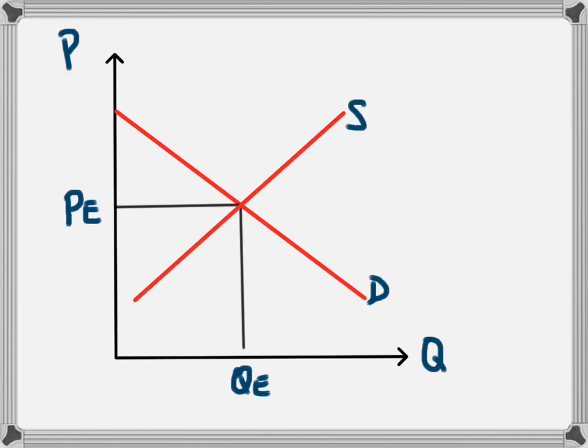So instead of just charging PE for all of their products, at lower output levels they would charge a higher price and at higher output levels they would charge a lower price. So this marginal revenue curve is showing that at low levels of output there's a large amount of revenue received for each product, but the marginal revenue, the extra revenue received for each product, decreases as the quantity increases.